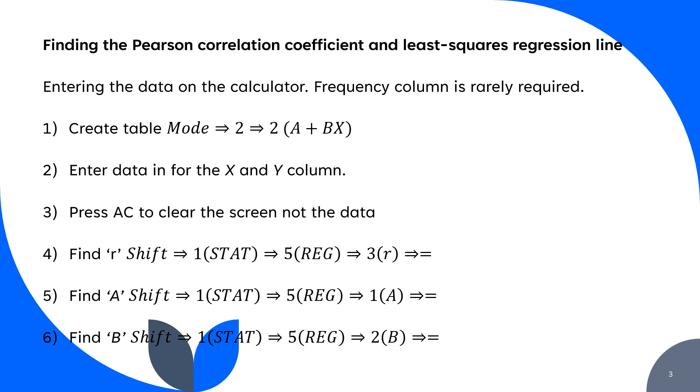That'll get you your Pearson's correlation coefficient. To find your A value, you press shift and then 1 for stat, 5 for regression, and then the 1 button for your A, and then press equals. That's your y-intercept. And to find the B value, it's shift, then 1, 5 for regression, and then 2 for the B. That is your gradient.